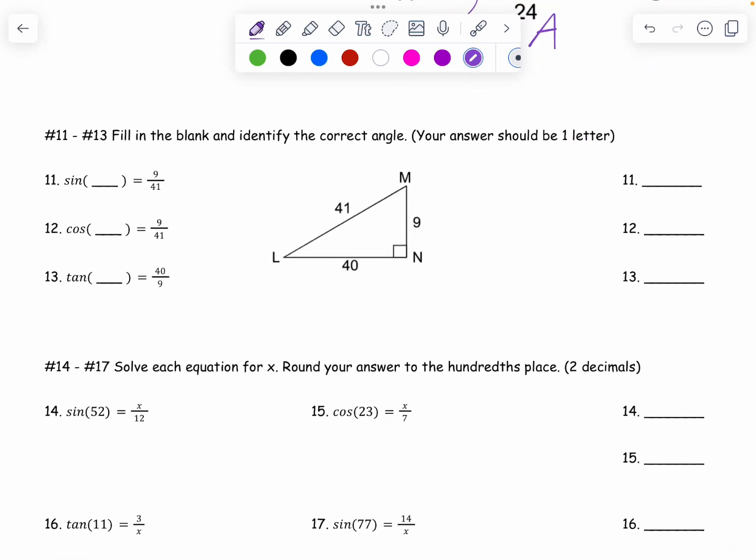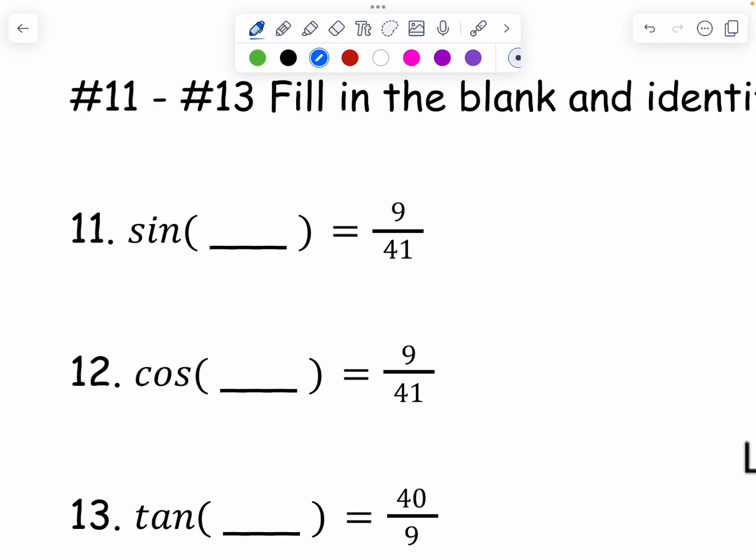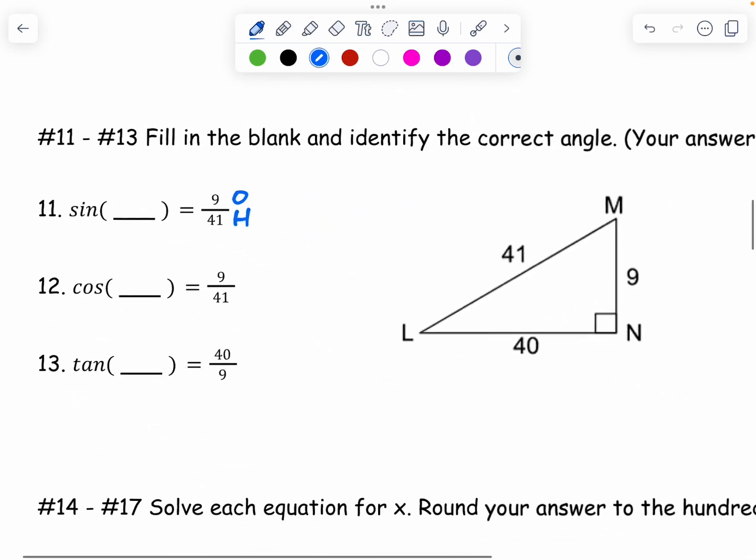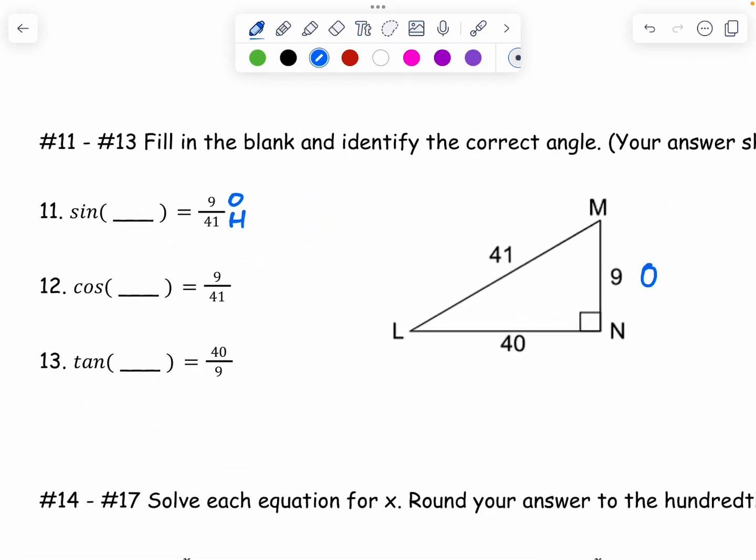11. It's asking me what angle goes in the blank in order to do sine 9 over 41. Well, I know from SOHCAHTOA that sine is O and H. So I'm going to label 9 with an O and I'm going to label 41 with an H. And I need to figure out what angle is opposite the opposite side. And it's L.